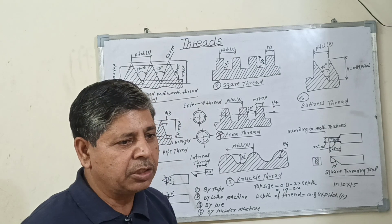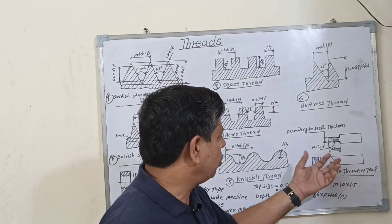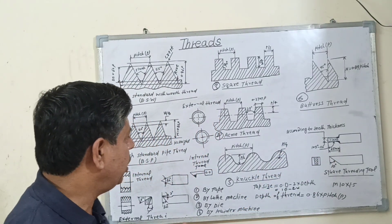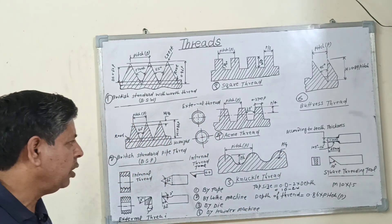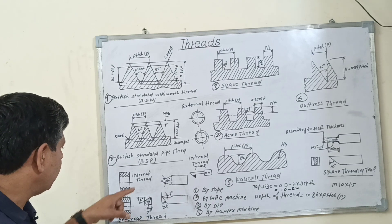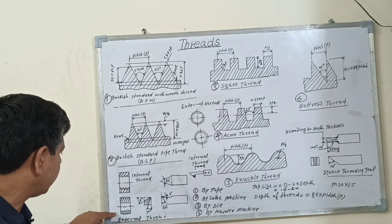The high speed cutting tool can withstand up to 600 degrees Celsius. This is the internal thread and this is the external thread.